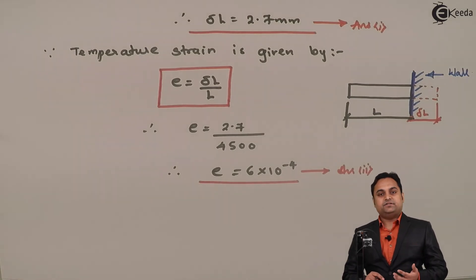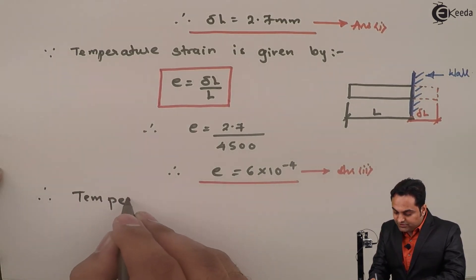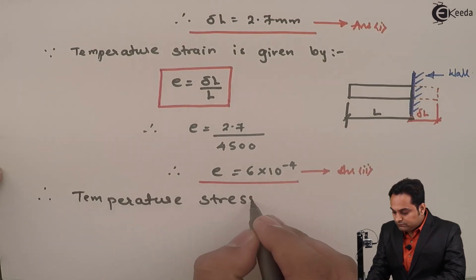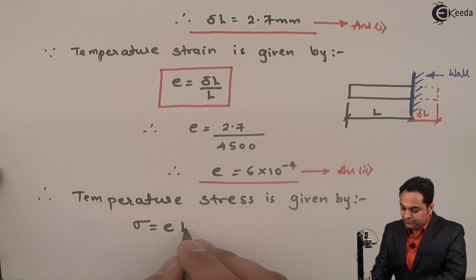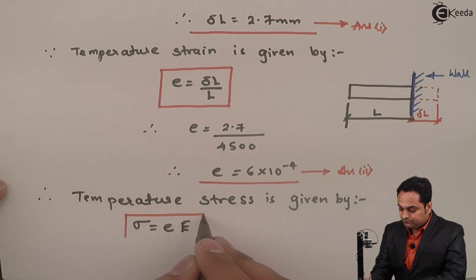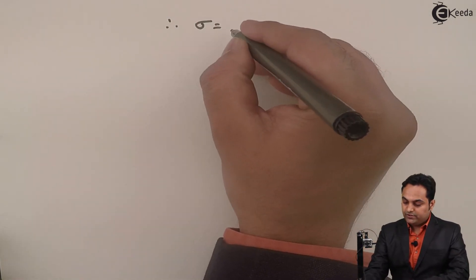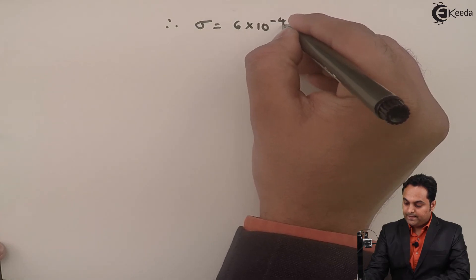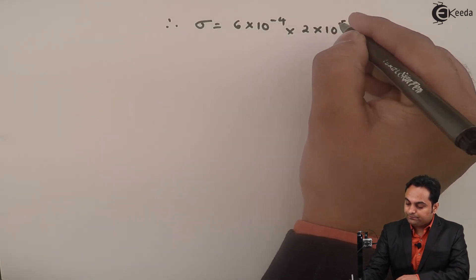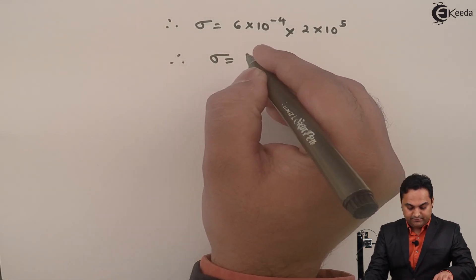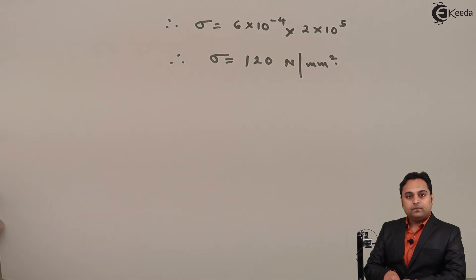Since the wall prevents free expansion, stress will be developed in the metal rod, which is called temperature stress. Temperature stress is given by sigma equals strain into Young's modulus. Therefore sigma equals 6 into 10 raised to minus 4 multiplied by 2 into 10 raised to 5. This gives a stress value of 120 Newton per mm square. This is the third answer.